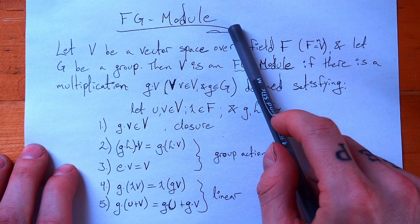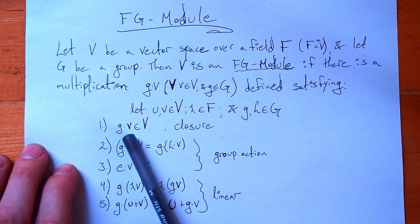The first property is closure: if we multiply our group element with a vector, we get something back in that vector space.